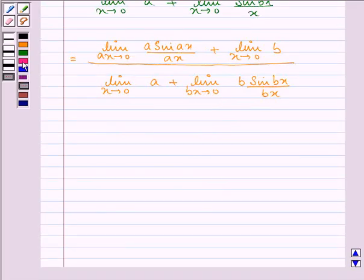Now, on using the limits, we have the answer: this limit as a into 1 plus b upon a plus b into 1.